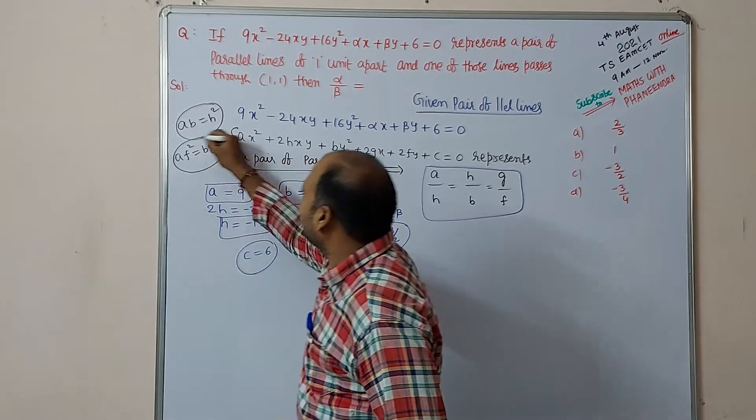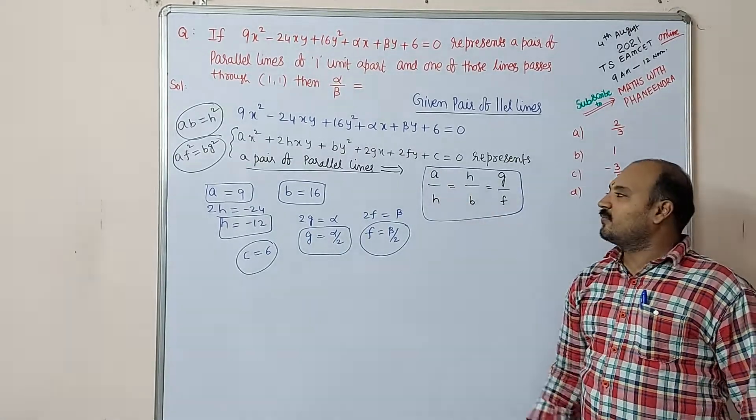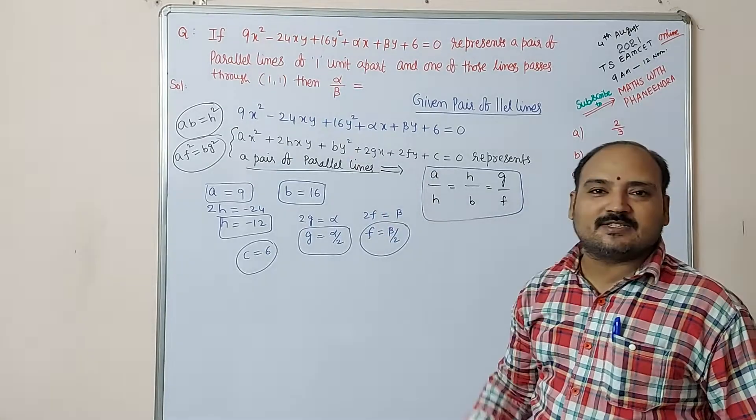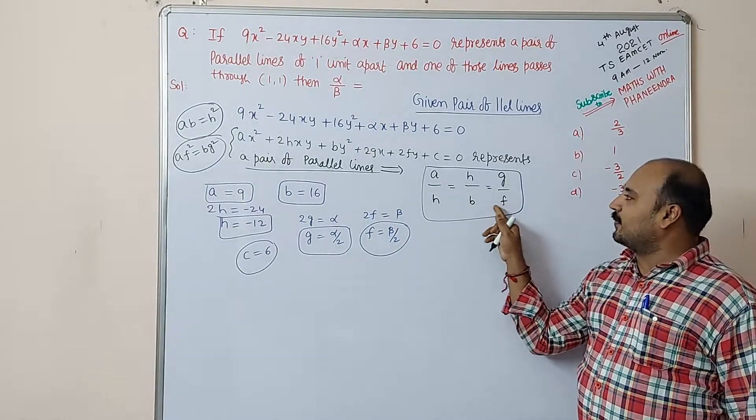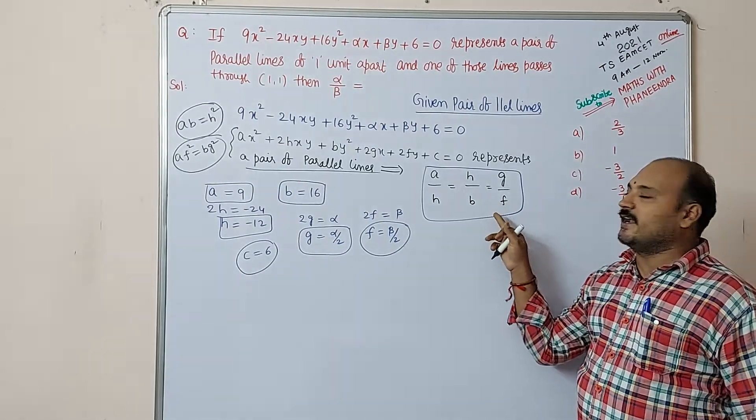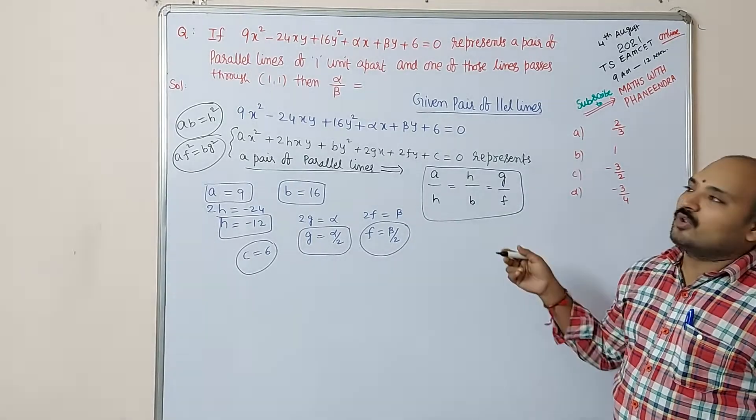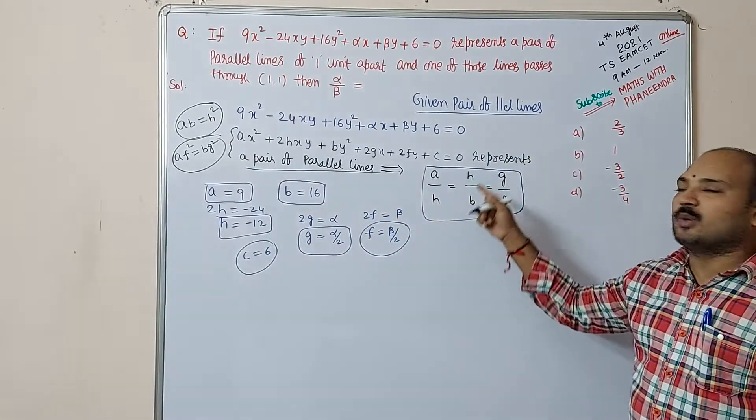Even this result, both the meaning is there. Here if you do the cross multiplication, ab = h², that's what it means. Even squaring on both sides, if you cross multiply this one and square on both sides, you will get the result.